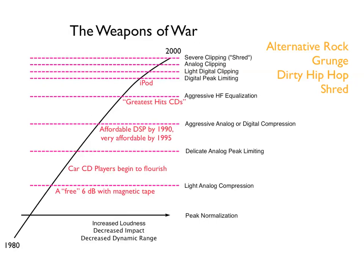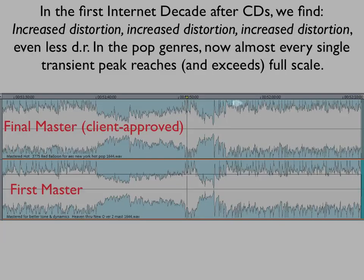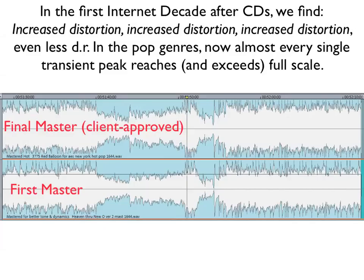The decade of downloads, MP3s, YouTube, and playback on home computer speakers with even less dynamic range. In the first internet decade after CDs began to wane, we find even more distortion, far greater distortion, and even less dynamic range. In the pop genres, almost every single transient peak reaches full scale. We have both positive and negative peaks on this diagram — looking at just the positive going peaks you can see peak, peak, peak — and you can imagine what kind of distortion there must be in this recording to achieve this completely artificial situation.